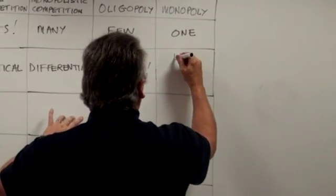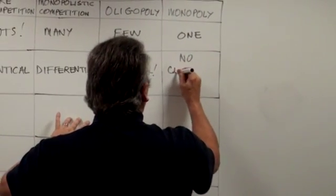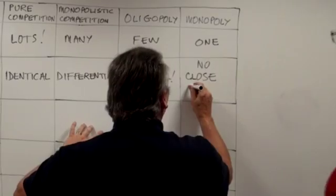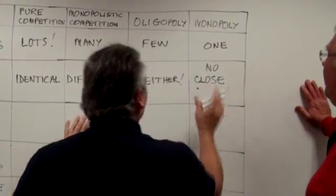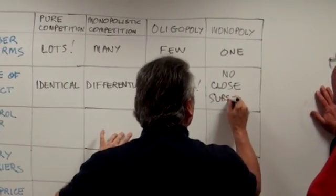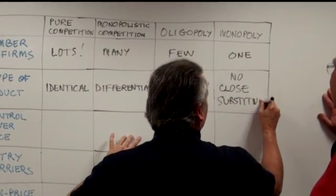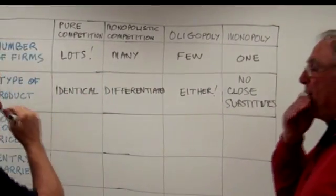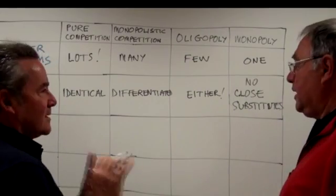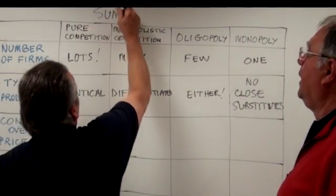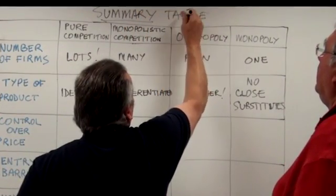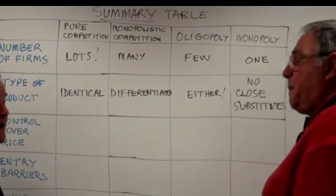Product Monopoly. We've come to the end of all the market structures, and what you're doing is giving me a summary table — a very, very useful summary of our key features and key characteristics of the various market structures.